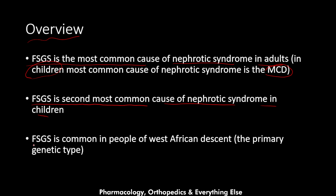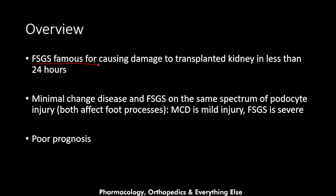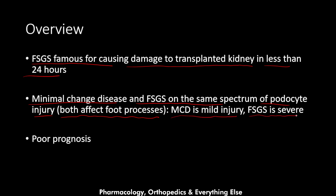FSGS is common in people of West African descent, particularly the primary genetic type. FSGS is also famous for causing damage to a transplanted kidney in less than 24 hours. Minimal change disease and FSGS are on the same spectrum of podocyte injury — MCD is mild injury while FSGS is severe. FSGS has poor prognosis and is resistant to steroids, while MCD has good prognosis and responds well to steroids.